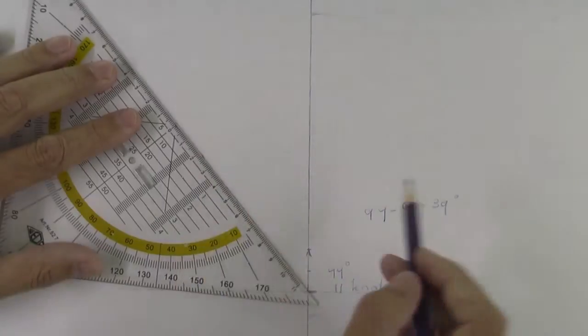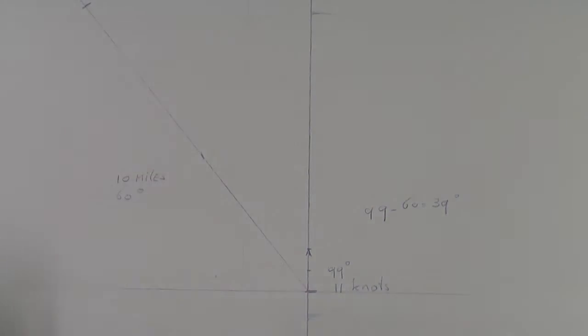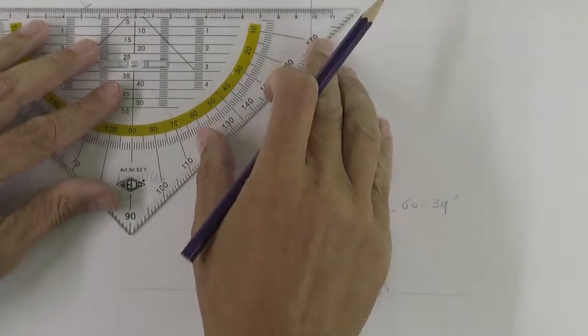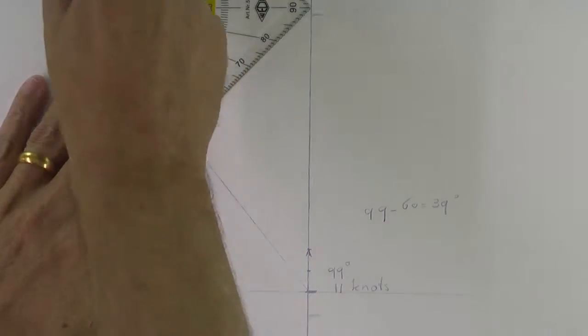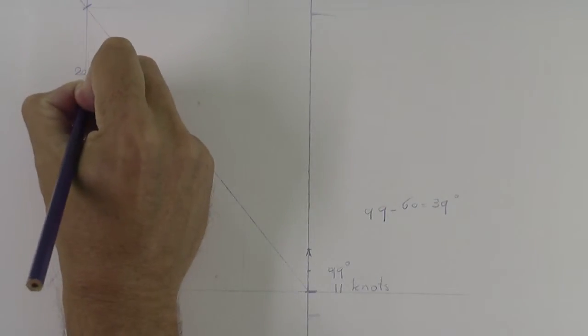So he saw the other ship at 60 degrees so his own ship was 99 degrees minus 60 degrees. It has 39 degrees relative to the ship, relative to the bow.